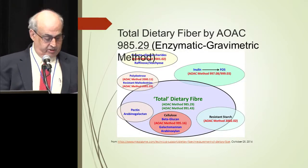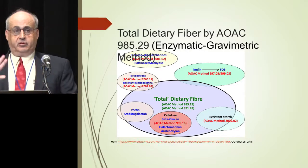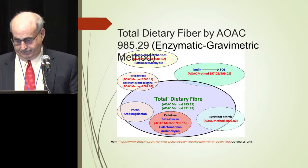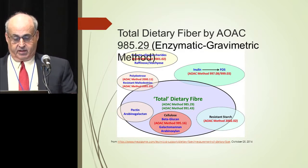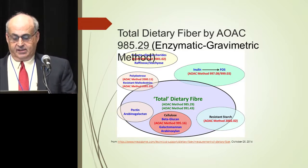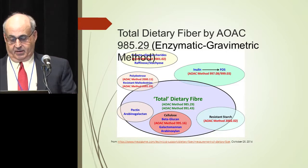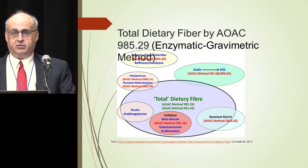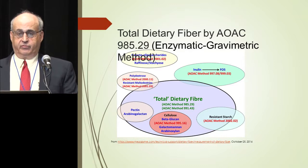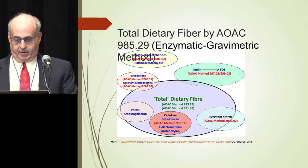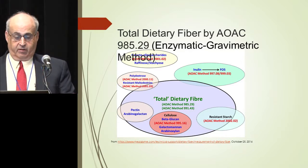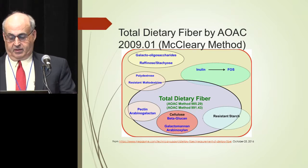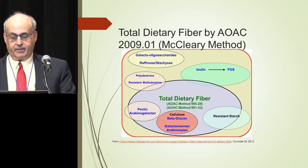Thanks to the Megazyme Corporation for these figures. This shows the enzymatic gravimetric method, but there are all these other things that were only partially included in that method — these little ovals are not proportional, of course, and they would vary from food to food depending on the carbohydrate makeup. Then looking at the new AOAC method, often called the McCleary method, it takes a broader scope and includes all these fractions.